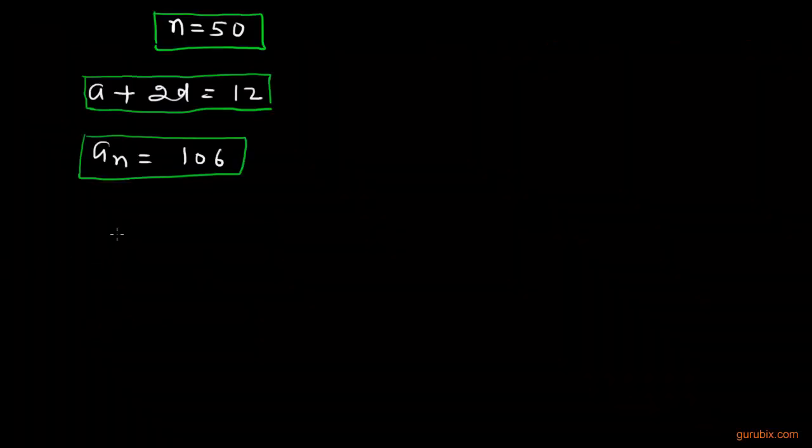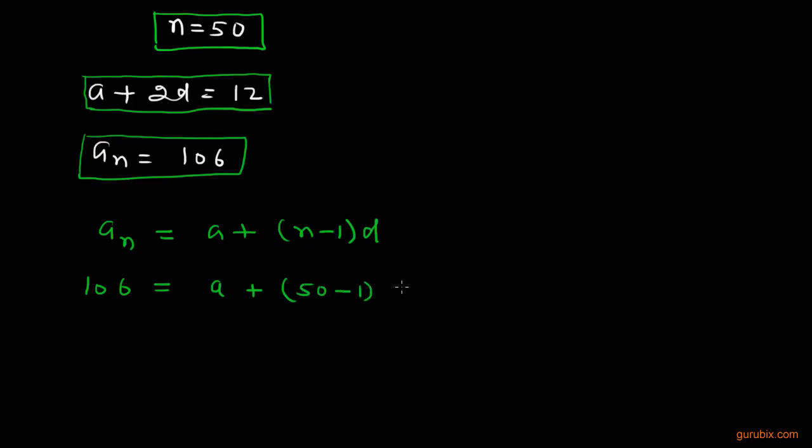We shall use the formula of the general term, and we know that the general term an equals a plus (n minus 1) times D. Here an is 106, we don't know the first term, but we know the value of n is 50, and we don't know the common difference.